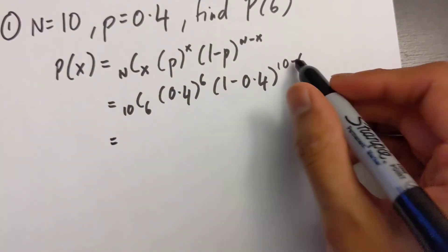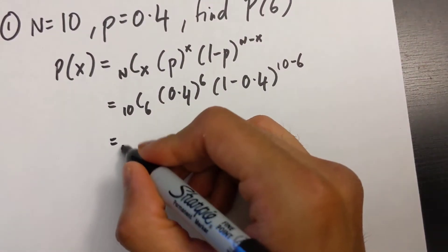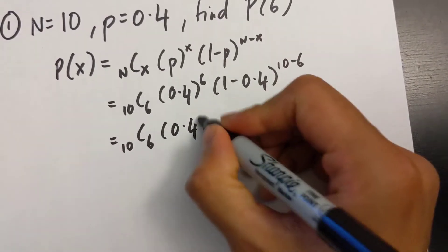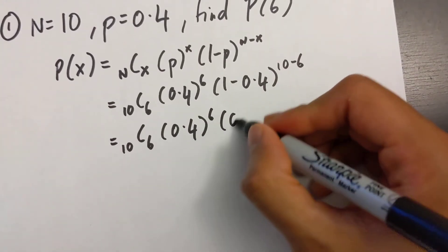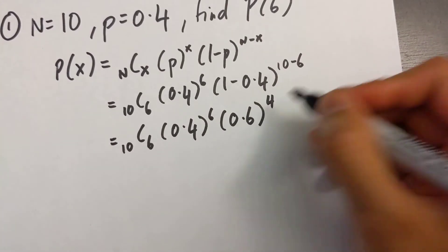Next, I'm going to just do these two subtractions really quick. So 10C6, 0.4 to the power of 6, 0.6 to the power of 4.